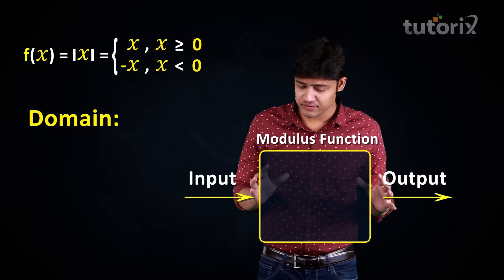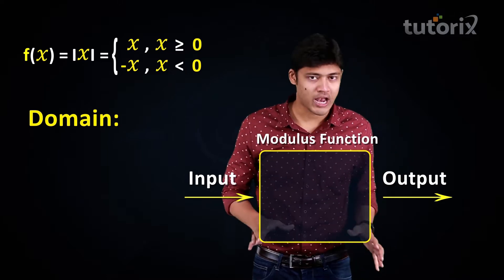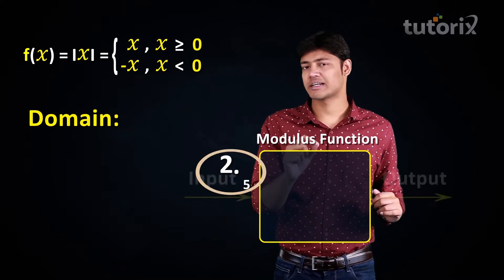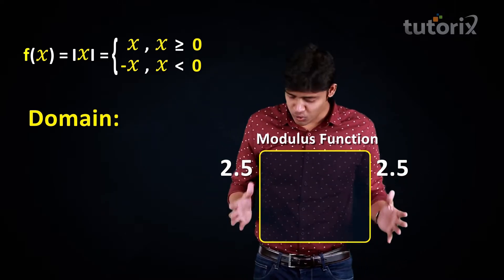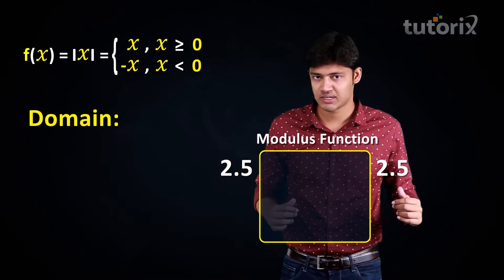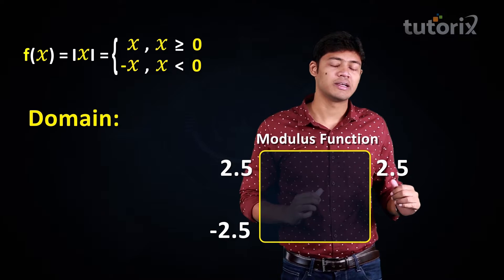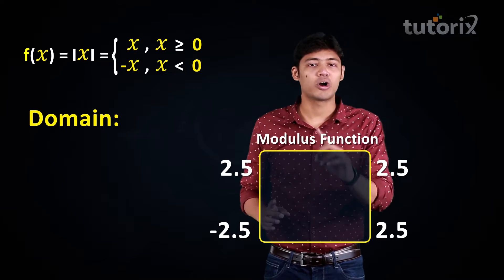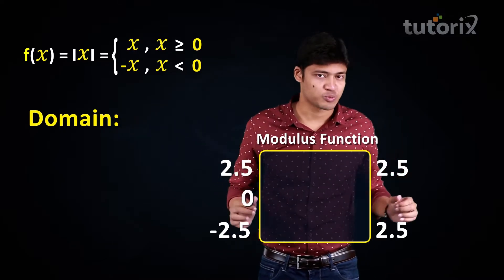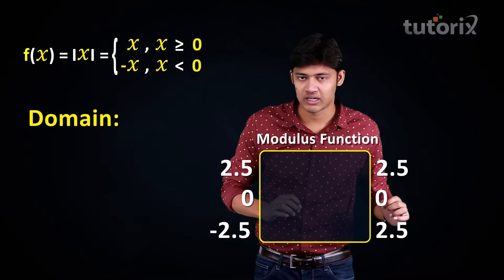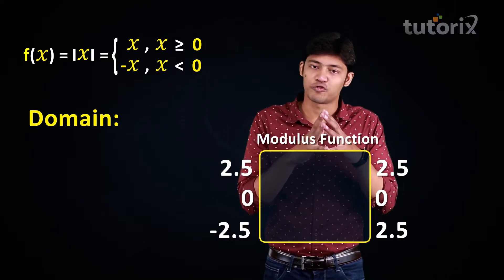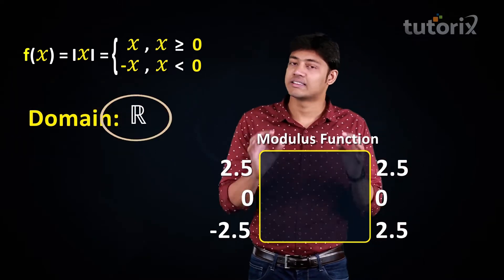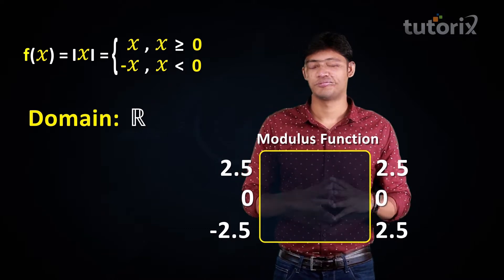Having understood the definition, let's find the domain of the modulus function — that is, all input values for which it is defined. The modulus function can accept positive real numbers, negative real numbers, and zero as well. So the modulus function is defined for the set of all real numbers, which means the domain of the modulus function is the set of all real numbers.